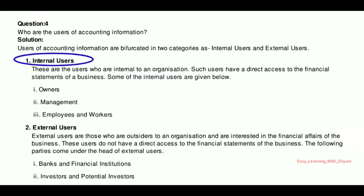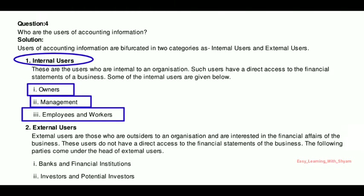Some of the internal users are: first, owners; second, management; third, employees and workers. The owner is the malik of the company, firm, or organization — which could be shareholders or individually one person. Second is management of a firm, organization, or company, and third are employees and workers.